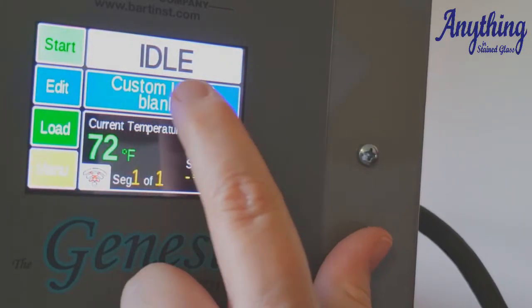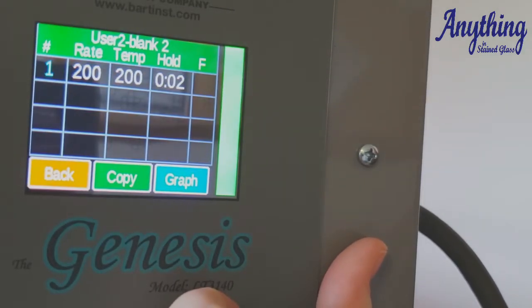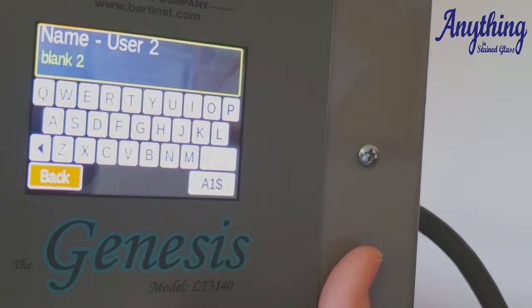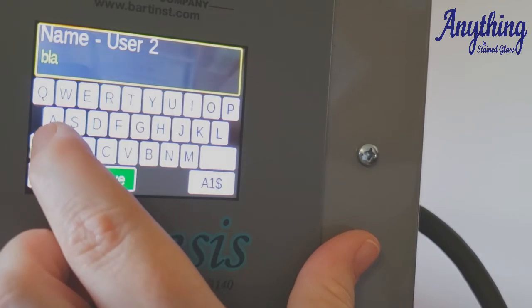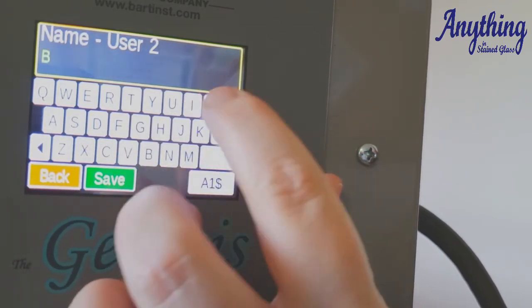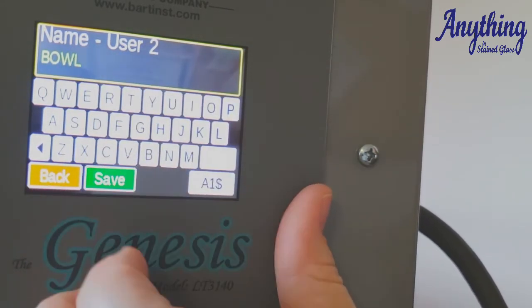And it's going to choose user 2 and it's going to load it. That gives us the ability to edit the program. Now, the amazing thing about this one is you can name your program. So you simply touch up there where it is, and you can name the program that you're firing. So let's say that you have a very specific program for a very specific bowl mold. You can put bowl or name it whatever you want and save it.